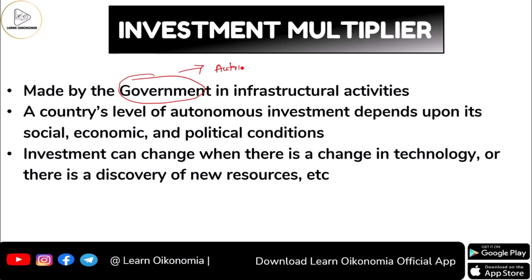Since this investment is not induced by income, autonomous investment is made by the government. The government spends on investment in the form of infrastructural activities — building roads, bridges, schools, government hospitals, etc. This is not dependent on government income; even if the government's income is zero, it will go for this type of investment.